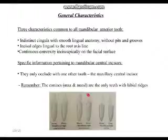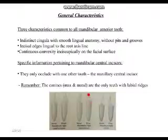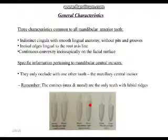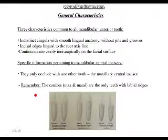Third: continuous convexity incisally and apically on the facial surface. Convexity means the surface curves outward rather than inward — and it's continuous and harmonious from the root through the crown on the facial surface. This applies to all mandibular anterior teeth. There is no specific complication to note for mandibular central incisors — they are the perfect, simple teeth.